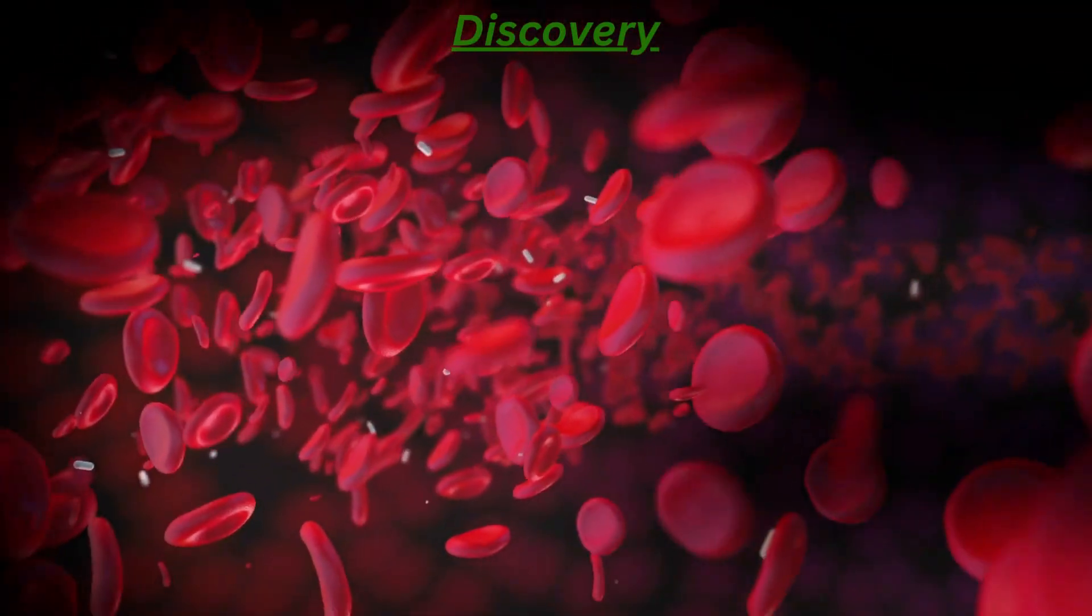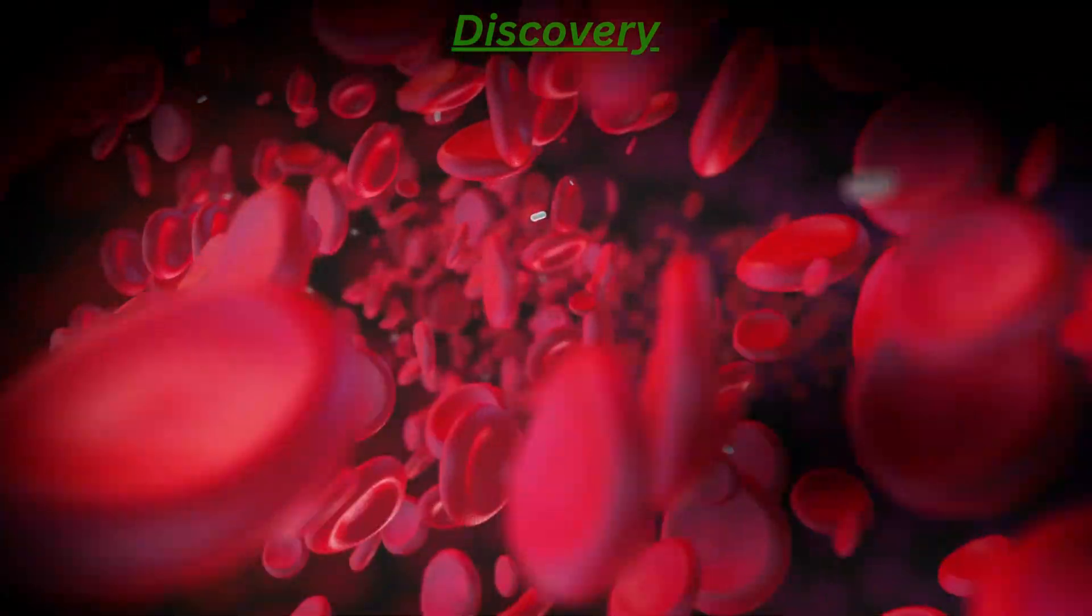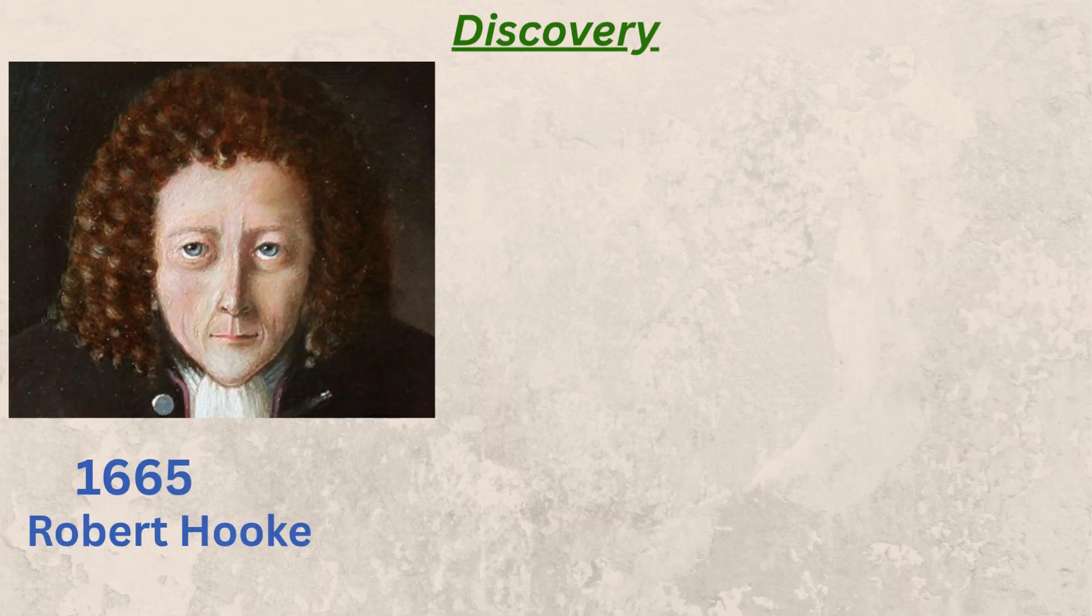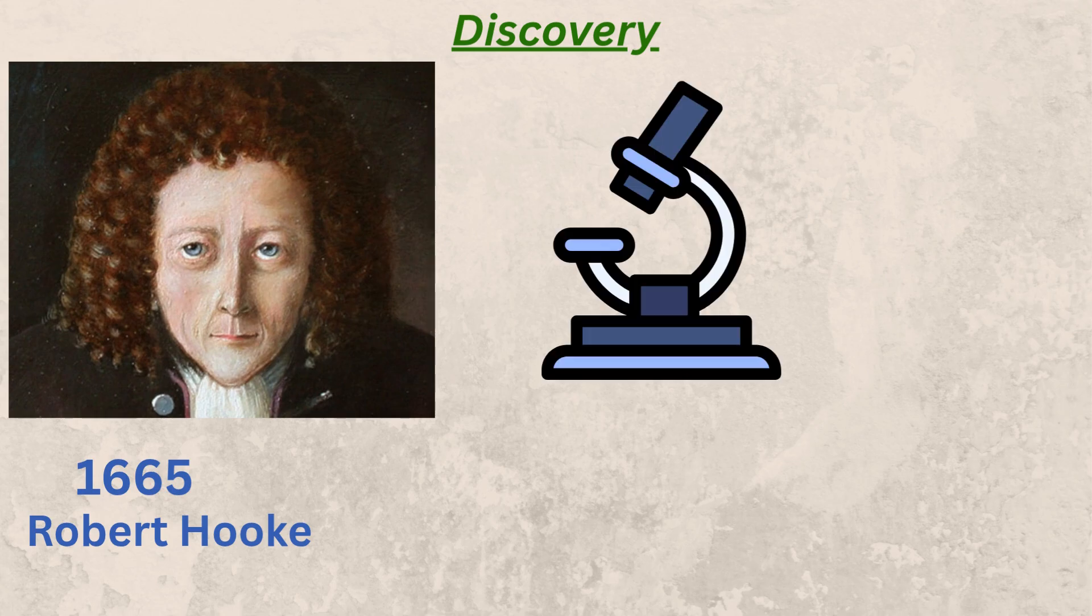Do you know how cells were discovered? In the year 1665, there lived a curious English scientist named Robert Hooke. He loved exploring tiny things that the human eye couldn't see. One day, he built a simple microscope, nothing like what we use today, but powerful enough to open a whole new world.